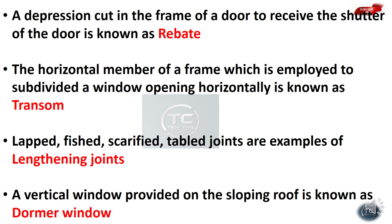The horizontal member of a frame which is employed to subdivide a window opening horizontally is known as a transom. The vertical member used to subdivide a window opening vertically is known as a mullion.